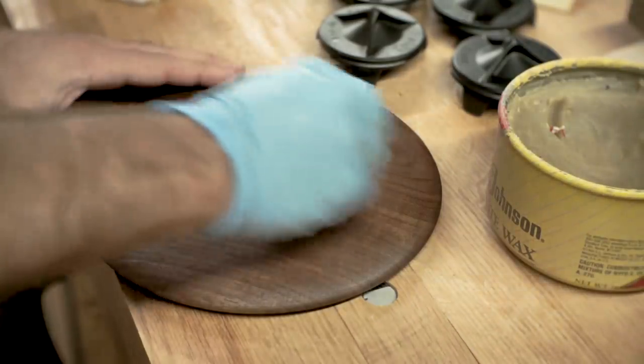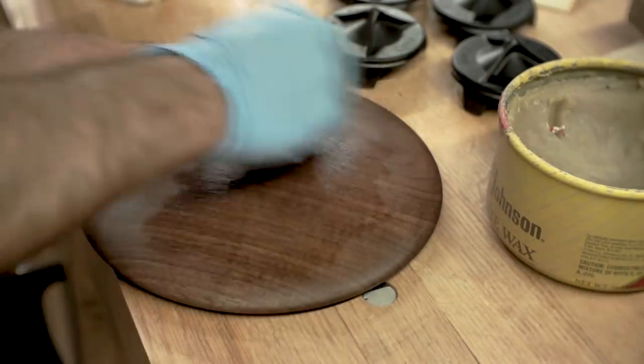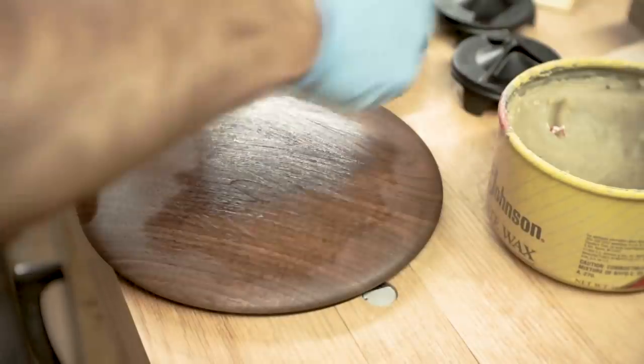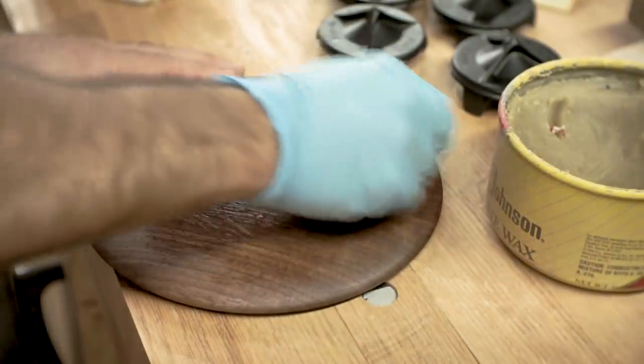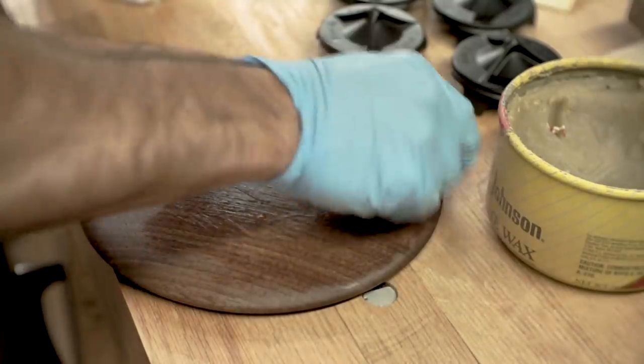And once that dries, then I'll put a second coat of oil on just with the rag, so it's a thin coat. And then once that dries, if it's a sufficient enough finish or if I want to put more on, I can continue to do it like that.